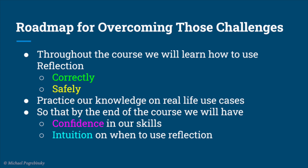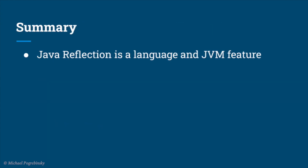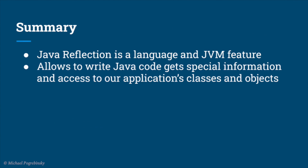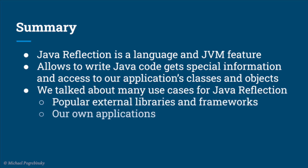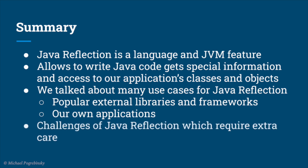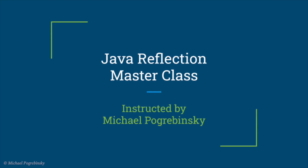So before we wrap up and move to the next lecture, let's quickly summarize what we learned so far. We learned that Java Reflection is a language and JVM feature that allows us to write Java code that analyzes other code and gets special information and access to our applications' classes and objects. We talked about some of the many use cases for Java Reflection, both in popular external libraries and for our own applications. And finally, we mentioned some of the challenges of using Java Reflection and the reasons we will need to take extra care while using it in our own projects. See you guys soon in the next lecture.